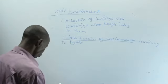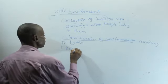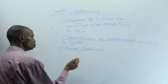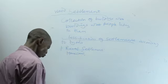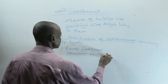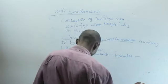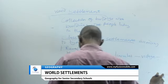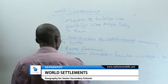Under classification by types, we have rural settlement. Rural settlement includes homestead, then it graduates to farmstead, then to hamlet, then to village, and it graduates to town, and then to urban center.